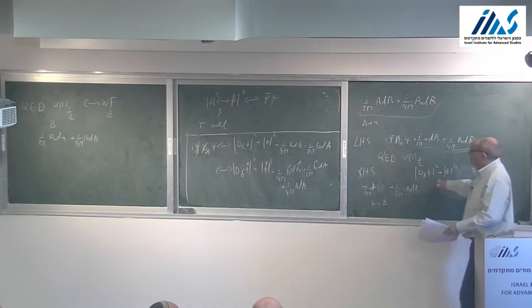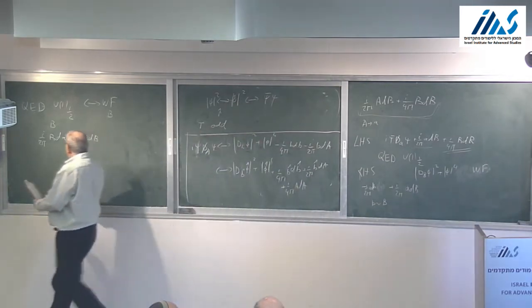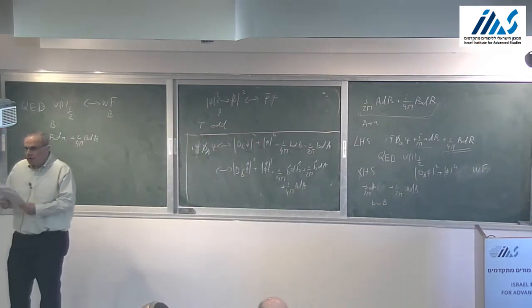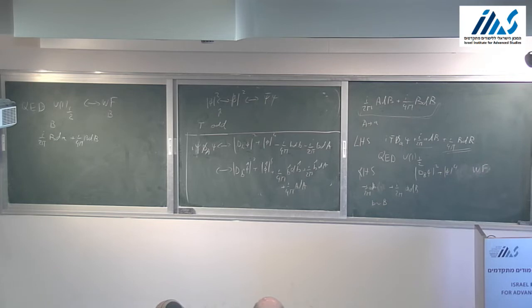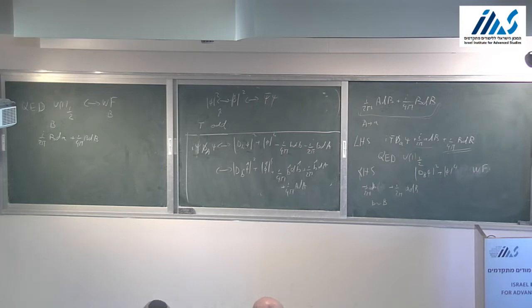I'm going to write this duality very explicitly because we need it here. All the dualities are IR dualities — these are different theories in the UV which flow to the same fixed point. That fixed point might or might not be a free theory. How many such IR fixed points are there? That's a very good question. We know of a lot of them, but there is no guarantee that we know all of them, and it might be that some of those we think are different are actually the same.